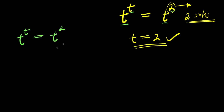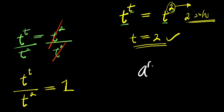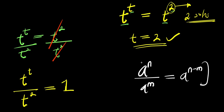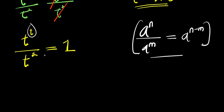The first method will be to simply divide each part of this equation by t to the power of 2. By dividing each part of the equation by t to the power of 2, this divides itself, and I have t to the power of t divided by t to the power of 2 equals 1. There is also an identity that a to the power of n divided by a to the power of n equals a to the power of n minus n. Going by this identity, I need to subtract the exponents because the bases are the same. I will have t to the power of t minus 2 equals 1.